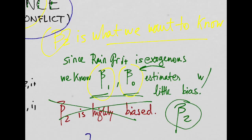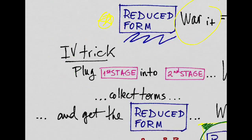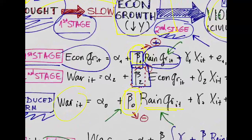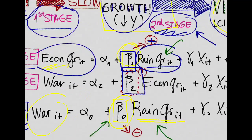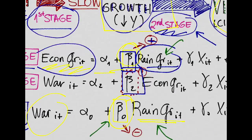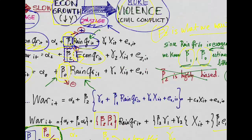How do we do this? Well, here is the IV trick. We plug the first stage regression into the second stage. Notice that the first stage has economic growth as a function of something, and then the second stage has here economic growth. So we just plug it in there. And that is this massive regression here.